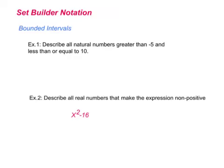Now we're going to use set builder notation to describe a few sets. We have different types of intervals to look at. First we'll look at bounded intervals — these intervals have boundaries on the top and bottom. The first example: describe all natural numbers greater than negative 5 and less than or equal to 10. Let's look at a quick graph of what we're describing.